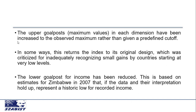The next change made in the HDI is that the upper goal post in each dimension has been increased to the observed maximum rather than a predefined cutoff. In the old HDI there were fixed maximum and minimum age limits, and changes were made in that area as well. In some ways this returns the index to its original design, which was criticized for inadequately recognizing small gains by countries starting at very low levels. Additionally, the lower goal post for income has been reduced, based on estimates of Zimbabwe in 2007, which represent a historic low for recorded income. The minimum wage rate or average minimum income was redesigned accordingly.